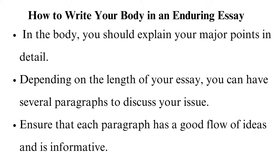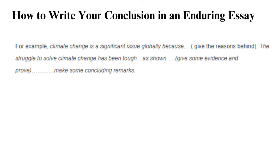The body section should have two parts. In the first part, with a few paragraphs, explain the issue's effects on people. In the second part, which includes two or more paragraphs, discuss how the issue has been changing and the form it takes today. How to write your conclusion in an Enduring Essay: in your conclusion, reiterate your claim, and explain why the issue is enduring and its significance. Finally, sum up all the main ideas and make a concluding remark. For example, state that climate change is a significant issue globally and give the reasons behind it.